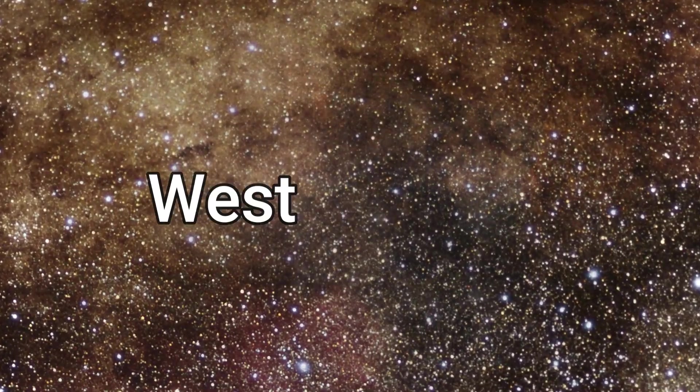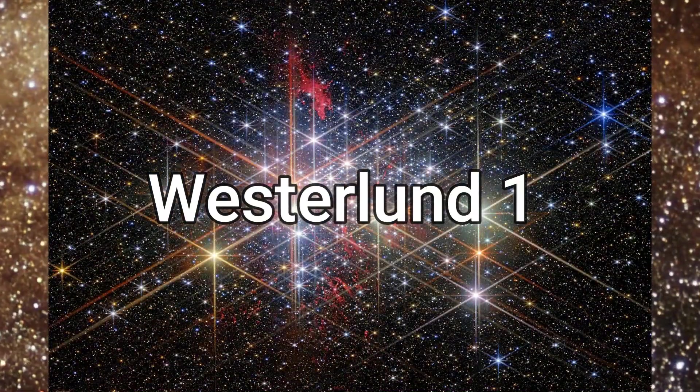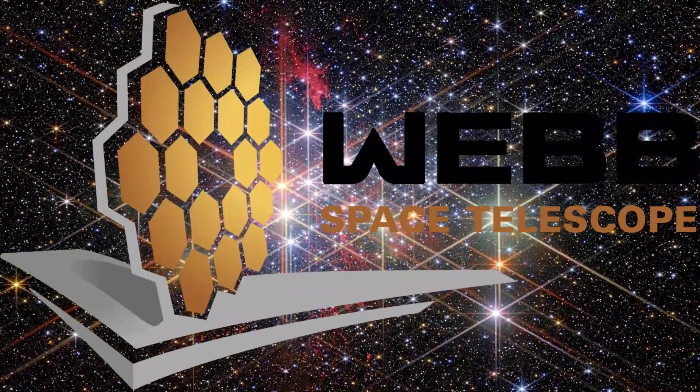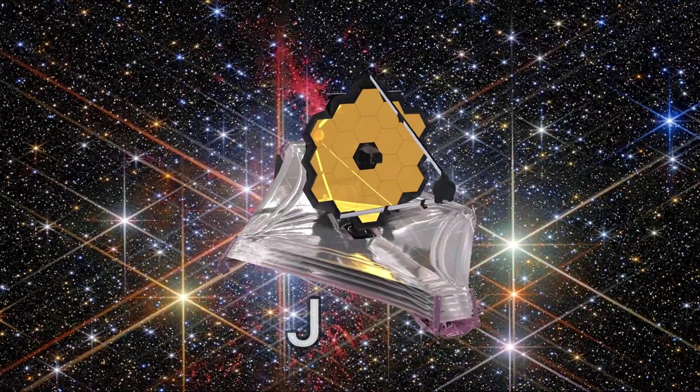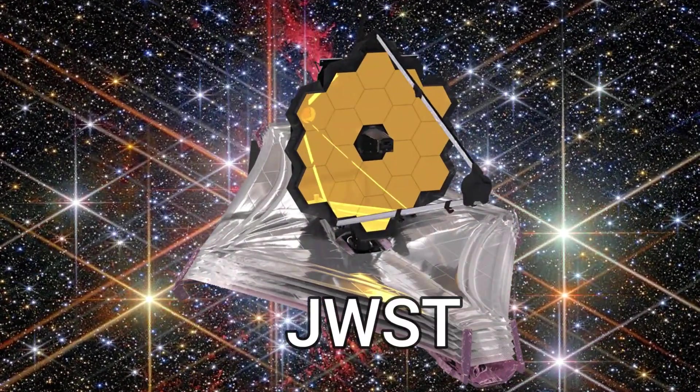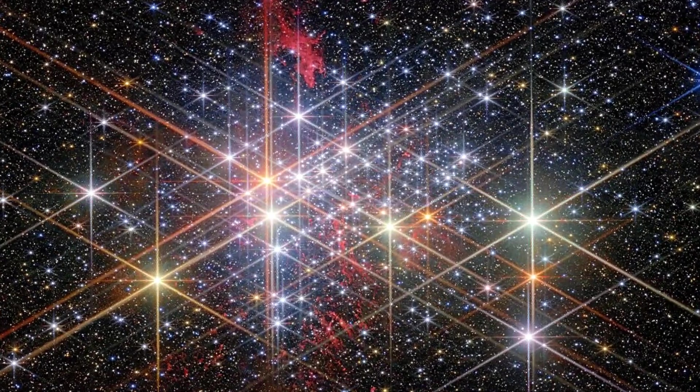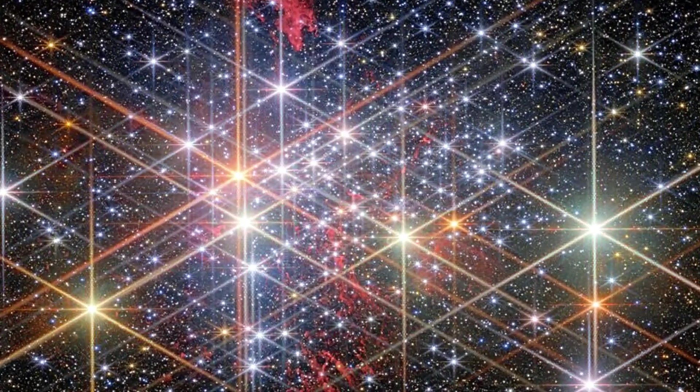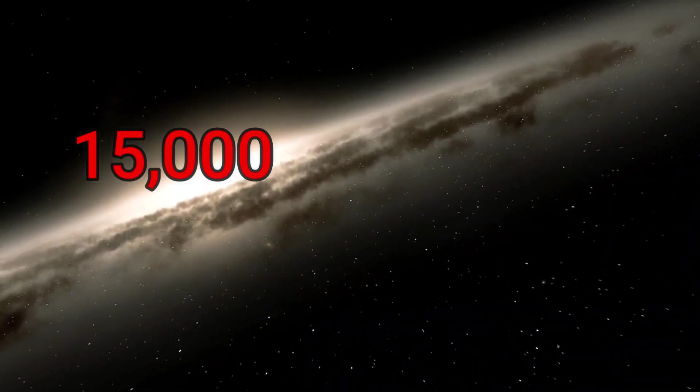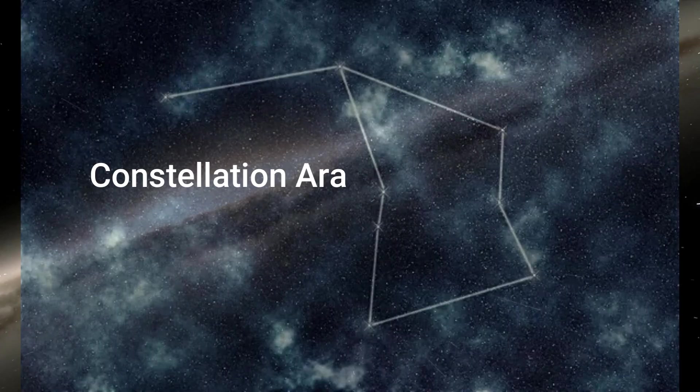One such cluster, Westerlund 1, has been captured in incredible detail by the James Webb Space Telescope, JWST. This image offers a stunning view of one of the most massive clusters ever identified within our galaxy, located approximately 15,000 light-years away in the constellation Ara.